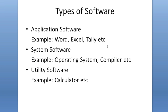Now let us come to the types of software. Mainly there are three types of software: application software, system software, and utility software. In different literature you may see only two types listed, but here I am discussing the broad types: application software, system software, and utility software.